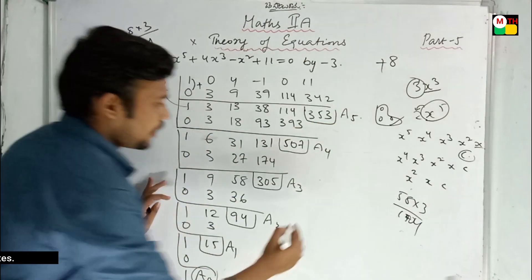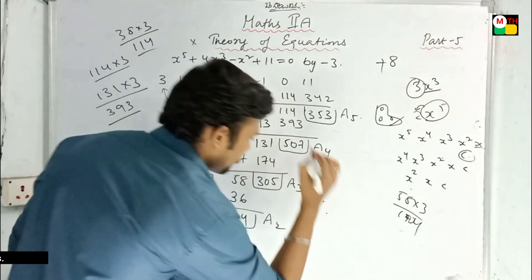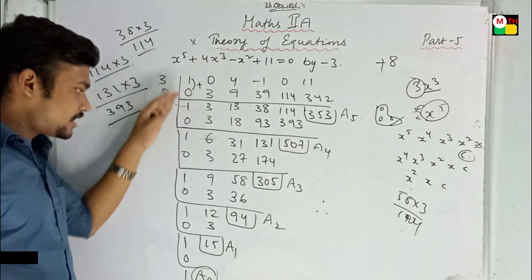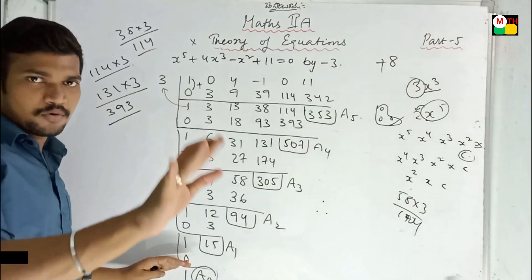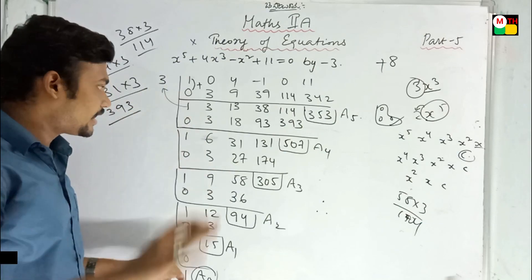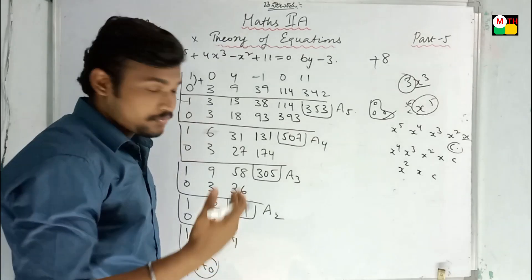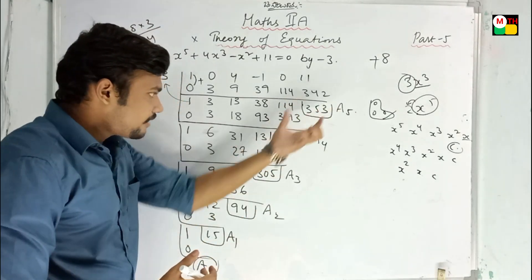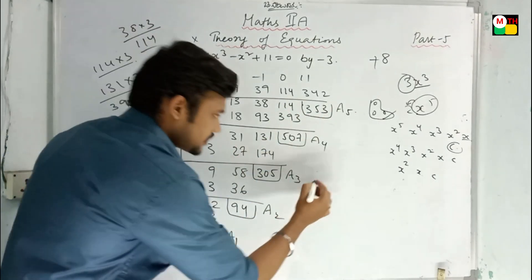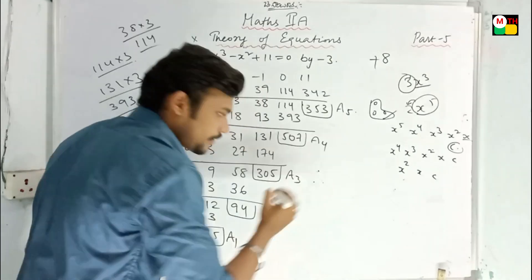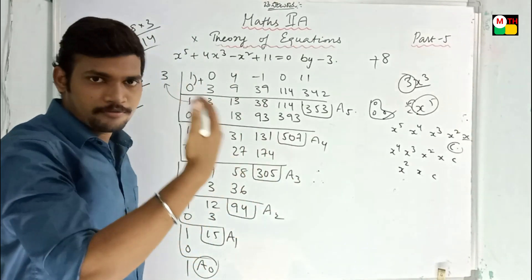Now therefore, these are the calculations. We will have to go — clear. We will have to go. Starting of equation: A0.